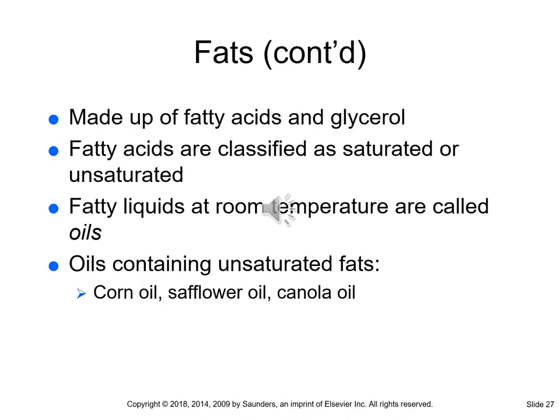Saturated and unsaturated fats are described in table 26-2 on page 467. Saturated fats include lard, margarine, shortening, and are found in bacon, ham, pork chops, and chicken with skin. Removing the skin from chicken removes a large portion of the saturated fat. Unsaturated fats are the healthier types and include corn oil, sunflower oil, and canola oil.